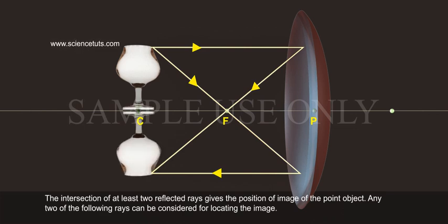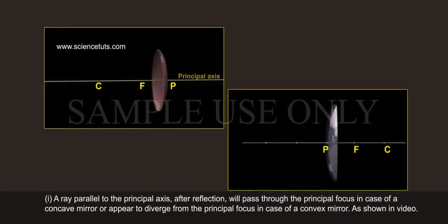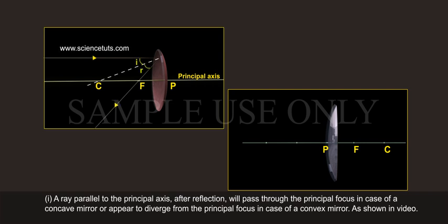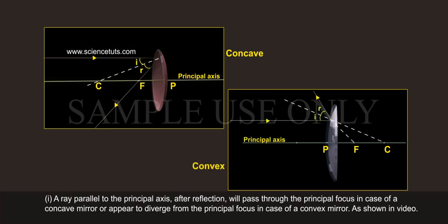Any two of the following rays can be considered for locating the image. First, a ray parallel to the principal axis after reflection will pass through the principal focus in case of a concave mirror or appear to diverge from the principal focus in case of a convex mirror, as shown in the video.